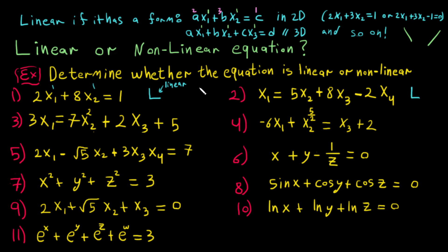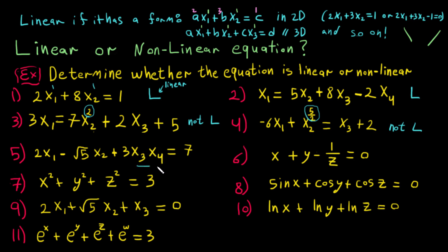In this third example, most terms have power one, but one term does not have power one, so it's not linear. Here the exponent is five over two, so not linear. The next one has power one, power one, but here variables are multiplied by each other, so it's not linear.